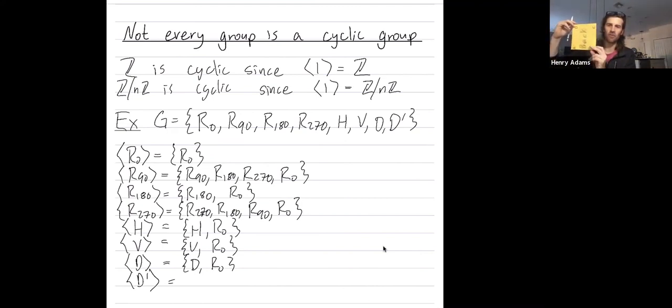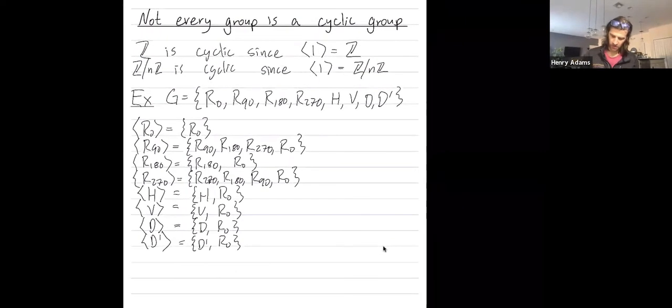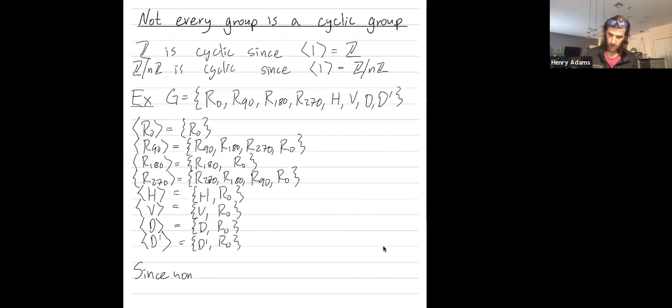And lastly, for the other diagonal flip. Do it once, you get that diagonal flip d prime, but do it again, and you get the identity back. So since none of these cyclic subgroups is equal to G, that is why G is not cyclic.